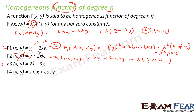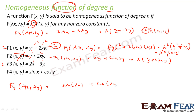The next example is f₄(x, y) = sin(x) + cos(y). If I find f₄(λx, λy), this becomes sin(λx) + cos(λy). I cannot take λ common from trigonometric functions, so I cannot write it in the form λⁿ · f(x, y). Therefore, this is also not a homogeneous equation.